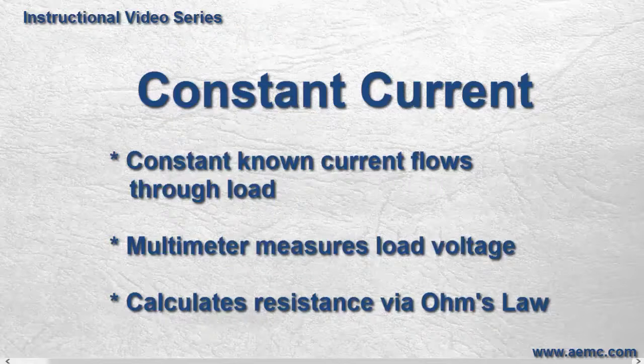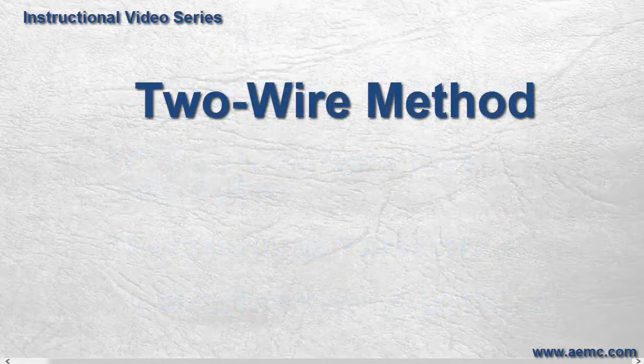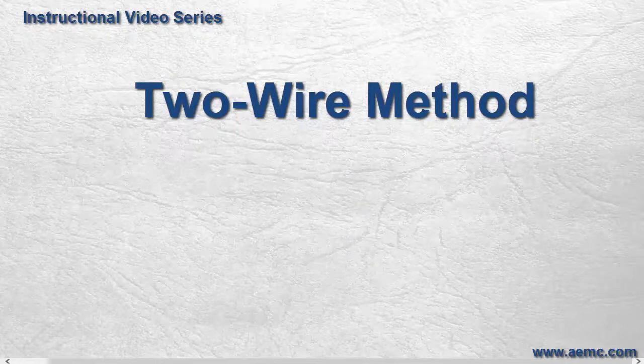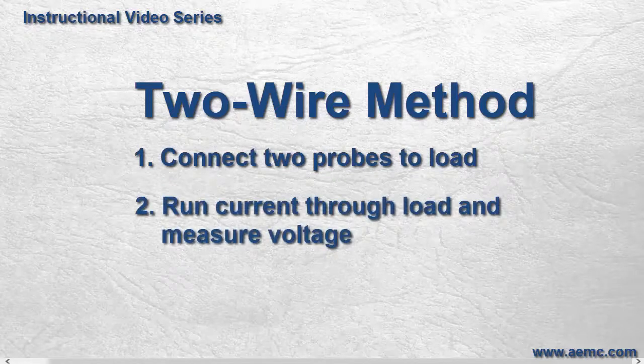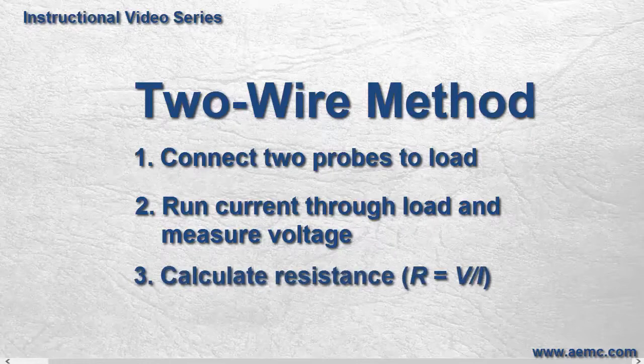A relatively simple setup for constant current and resistance measurements is the two-wire method, also called the two-probe method. This entails connecting two probes to the load under measurement, running a known current through the load and measuring the resulting voltage, and then calculating the resistance.